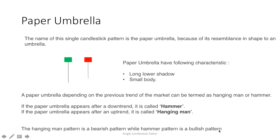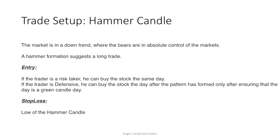The hanging man pattern is a bearish pattern, while the hammer pattern is a bullish pattern. For the hammer, consider the market is in a downtrend and bears are in absolute control. A hammer formation suggests a long trade. A risky trader can buy the stock on the same day, around 3:20, if the hammer candle is forming after a downtrend.